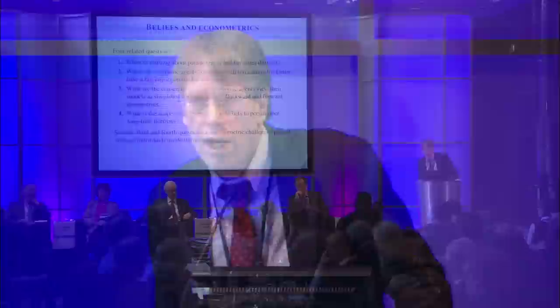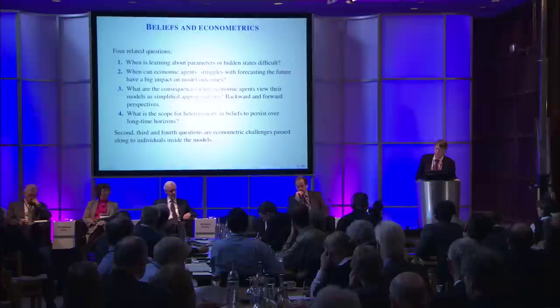I'm certainly sympathetic towards pushing beyond the rational expectations paradigm — I think it is very limiting, and it's constructive to explore alternatives. As we do this, we have to confront four related econometric-style questions. First: when is learning about parameters or hidden states difficult? Second: when can economic agents' struggles with forecasting the future have a big impact on model outcomes? Third: what are the consequences when economic agents view their models as simplified approximations — both when looking backwards at historical data and when looking forward making decisions under potential misspecification?